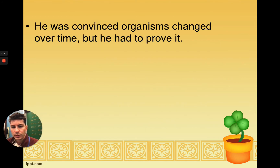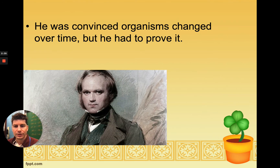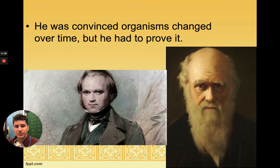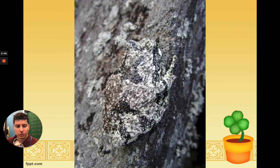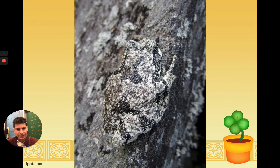Darwin's goal was to somehow prove that organisms changed over time — in other words, prove evolution. Even though Darwin never used the word 'evolution,' previous people had said that evolution does exist, but no one was able to prove it, and that was Darwin's goal.